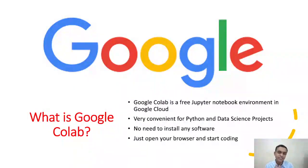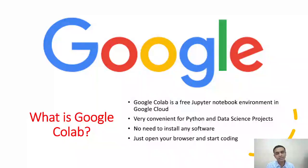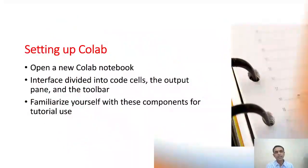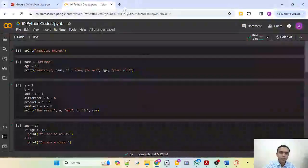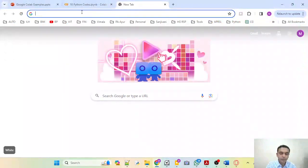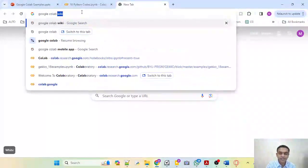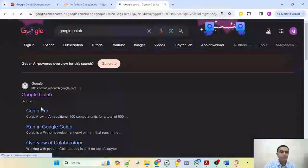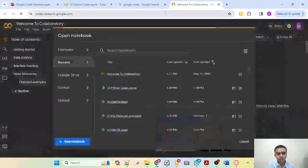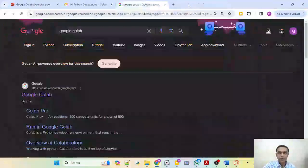So what is Google Colab? We have extensively prepared a video prior to this. It's a free Jupyter notebook environment on Google Drive and Google Cloud. Setting up Colab is quite easy — you just go to the Google browser, type Google Colab, and you are right there. An extensive video is prepared on this, so please use that video.